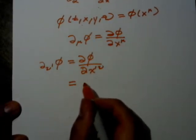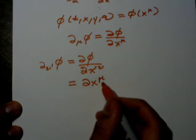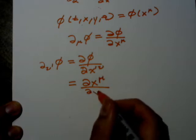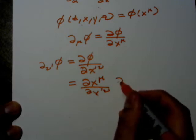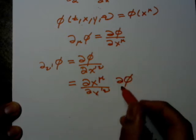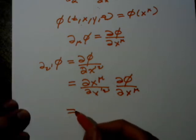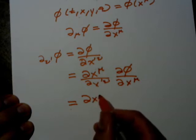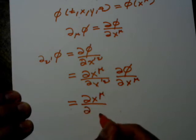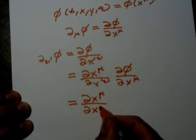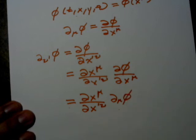This equals (∂X^μ/∂X′^ν)(∂φ/∂X^μ). We're taking partials with respect to X′^ν and multiplying by the partial of our scalar function with respect to X^μ coordinates.